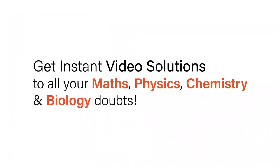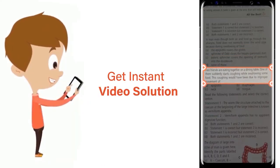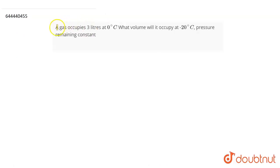With Doubtnut, get instant video solutions to all your math, physics, chemistry, and biology doubts. Just click the image of the question, crop the question, and get instant video solution. Download Doubtnut app today. The question is: a gas occupies three liters at zero degrees Celsius. What volume will it occupy at minus 20 degrees Celsius, pressure remaining constant?